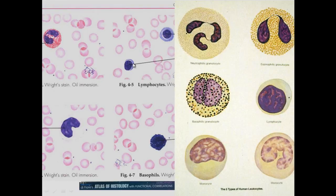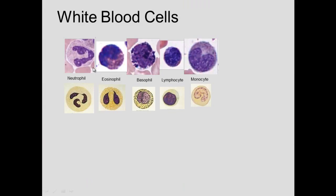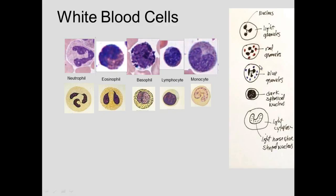We can identify eosinophils, lymphocytes, and monocytes in blood drawings. Neutrophils have small granules and a lobulated nucleus. Eosinophils have large red granules and a lobulated nucleus. Basophils also have large granules and a lobulated nucleus. Lymphocytes have a small cell with a large nucleus-to-cytoplasm ratio. Monocytes are also present. So three cell types — neutrophil, eosinophil, and basophil — all have lobulated nuclei.